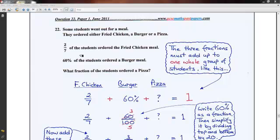Now, the thing you must realize here is that three things are ordered: fried chicken, a burger, and pizza. And this represents all the students, the whole group of students.